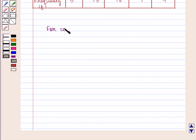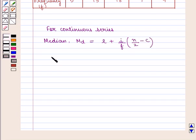For continuous series, median MD is given by the formula L plus I upon F into N by 2 minus C, where N is the sum of the frequencies denoted by summation F. N by 2 is the median number.